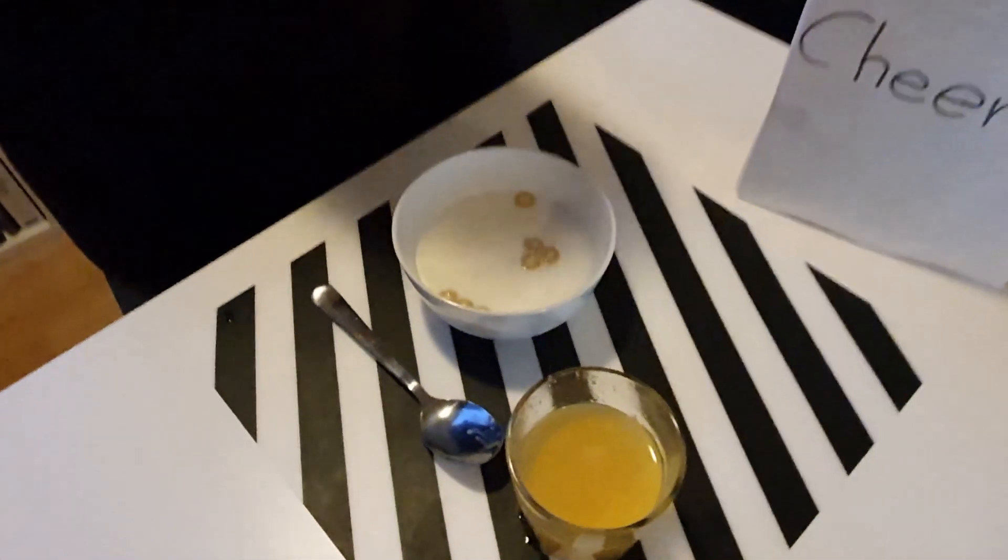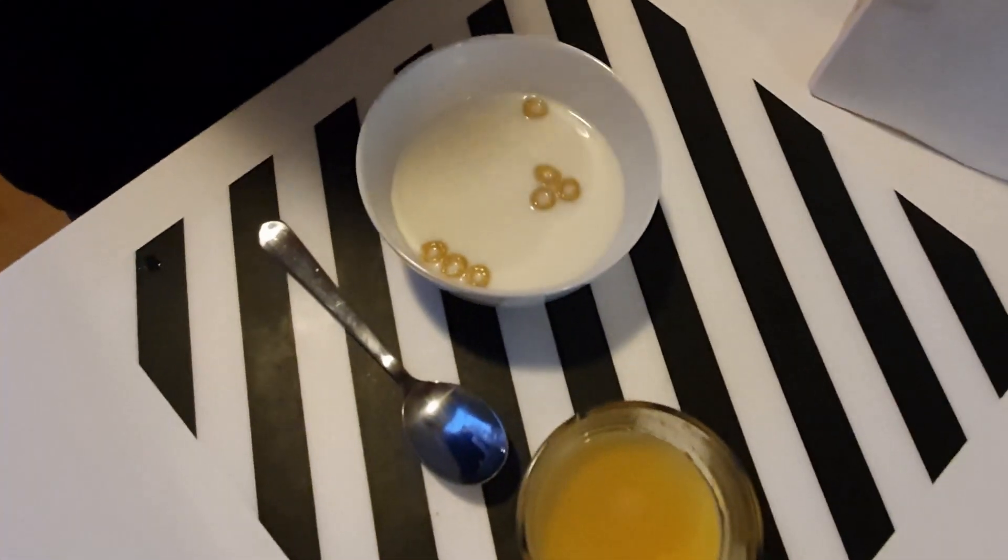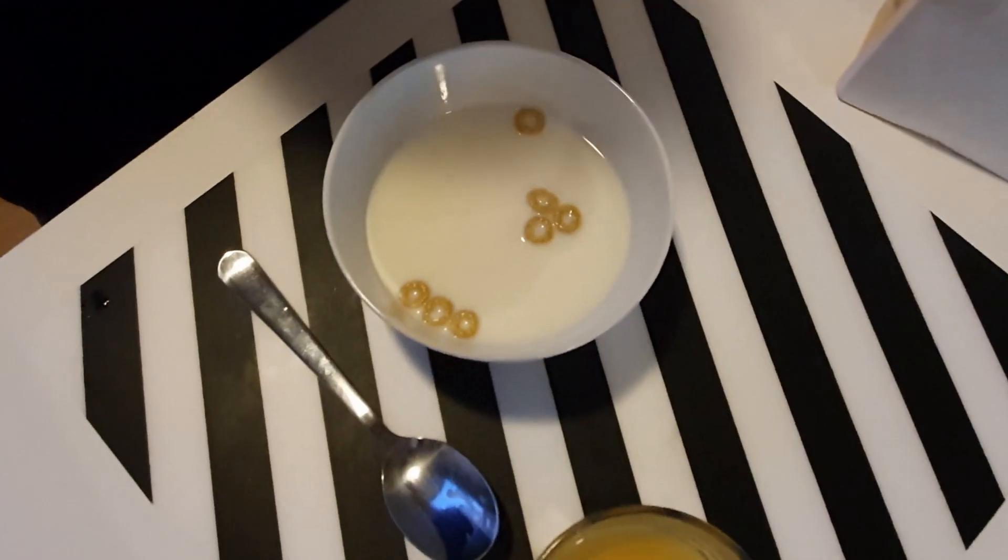As you can see, the Cheerios either clump together in the middle of the bowl or stick to the sides of the bowl. What is causing this effect?